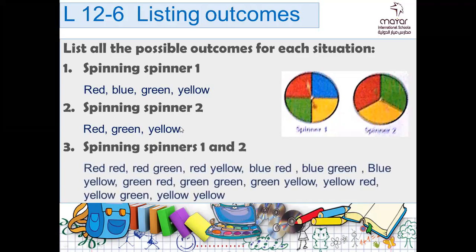So imagine how many possible outcomes we have — let's count them: 1, 2, 3, 4, 5, 6, 7, 8, 9, 10, 11, 12. If we spin spinner one we get 4 outcomes; if we spin spinner two we get 3 outcomes; if we spin spinner one and two together we get 12 outcomes.